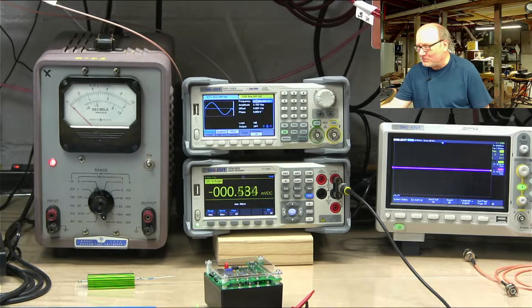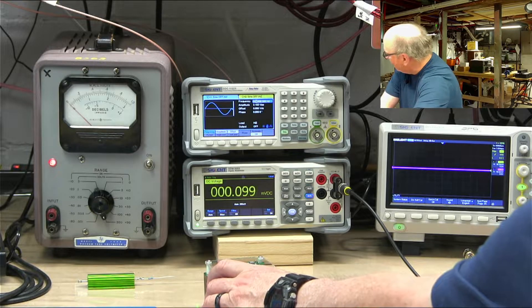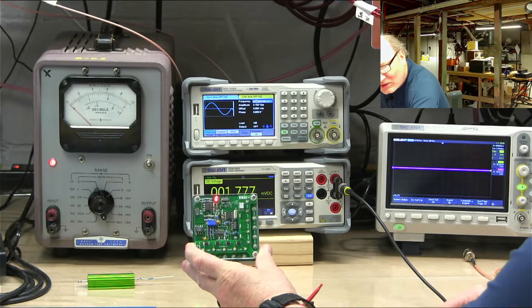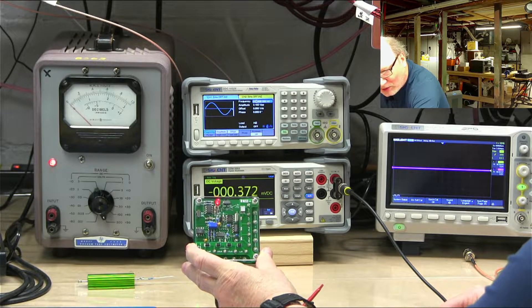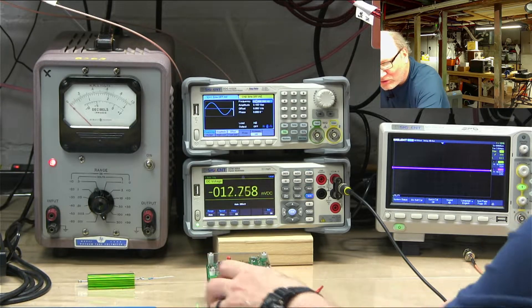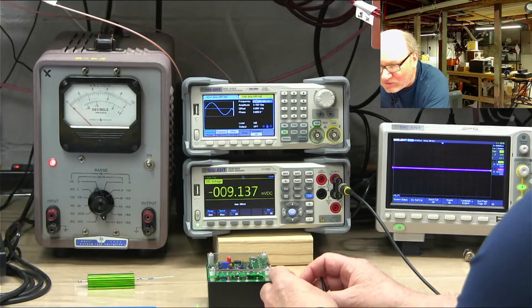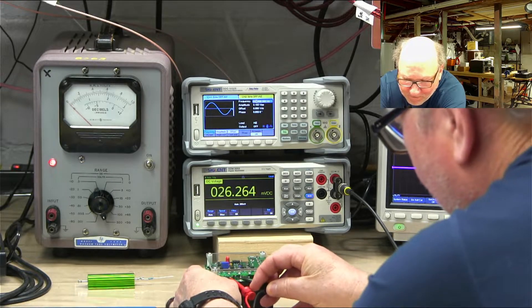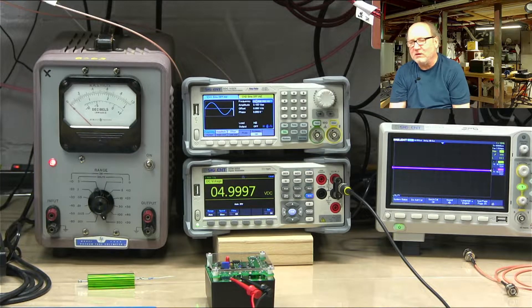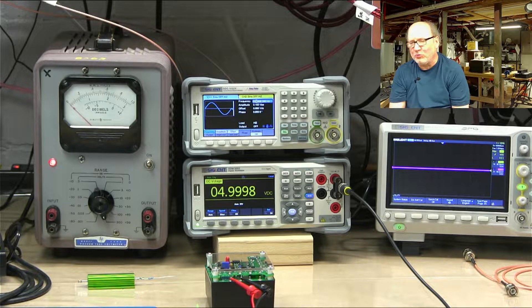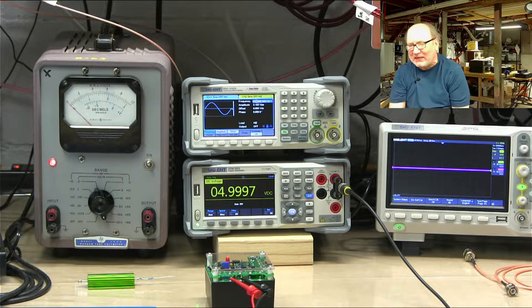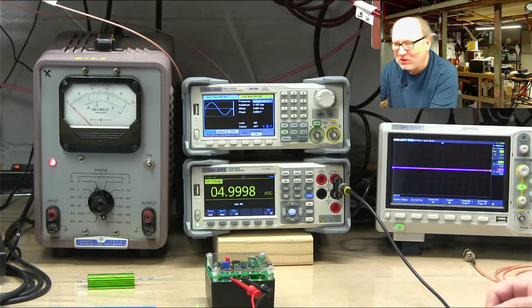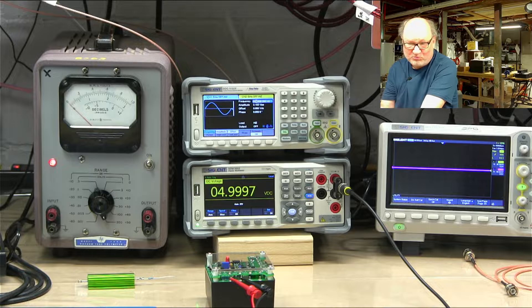Here's my equipment. This is the Fluke DMM check plus, and we're going to start with measuring the DC voltage. So we put the leads here and it measures 4.997. That's a slow reading, not a fast mode.